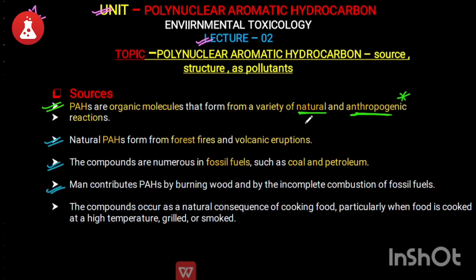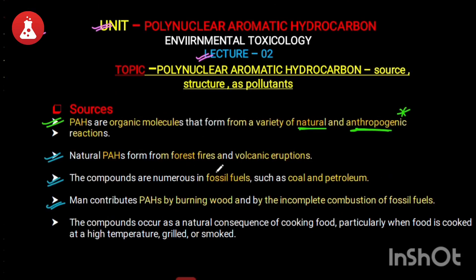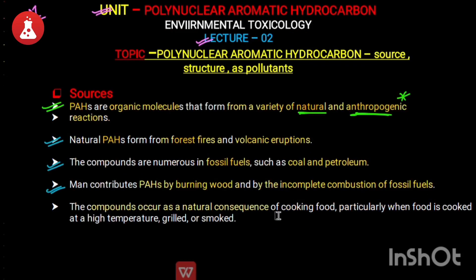If we talk about man-made or anthropogenic reactions, PAH is produced by burning wood and by the incomplete combustion of fossil fuels. When humans burn wood or carry out incomplete combustion of fossil fuels, PAH formation occurs. This compound is also a natural consequence of cooking food, particularly when food is cooked at a high temperature, grilled, or smoked.